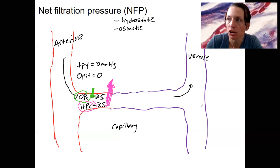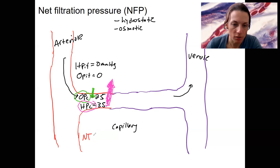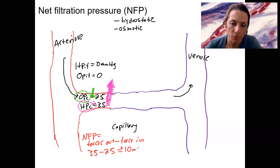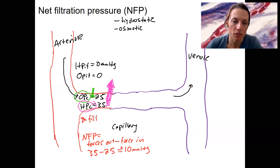What is the net filtration pressure at this location? Net filtration pressure is the forces out minus the forces in. With zero interstitial values, forces out is 35 minus 25 for the forces in, giving us plus 10 millimeters of mercury. Plus 10 means filtration occurs — the net pressure inside is positive, it's higher than it is outside.